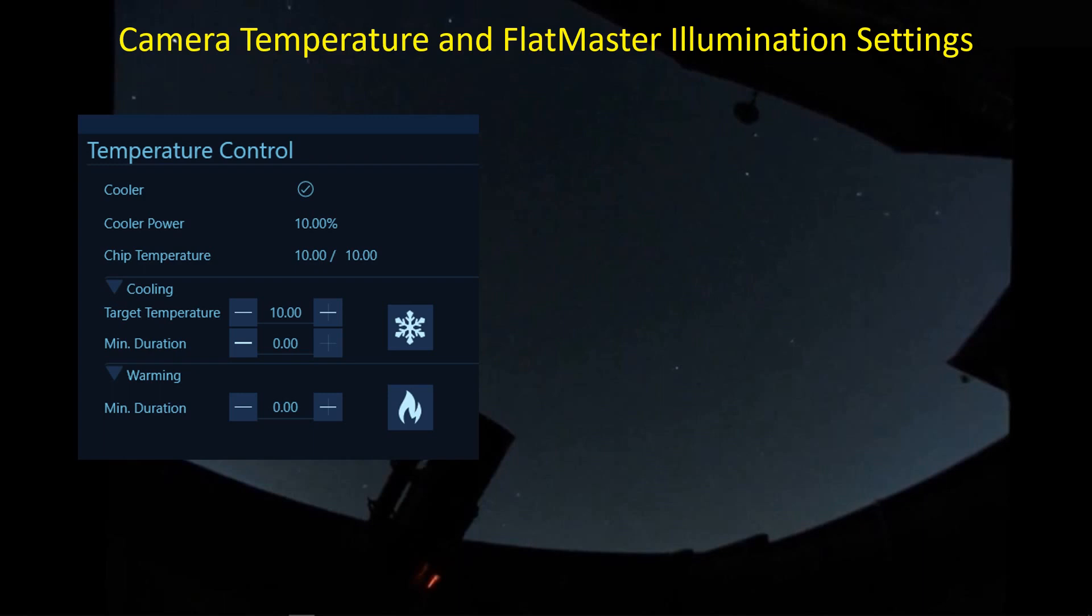But not the minus 10 degrees C that I go to outside when I'm taking lights. I just want to be consistent with the temperature and with the corresponding dark flats so that I can extract out that dark current noise from the flat data.